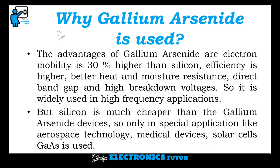Next is why gallium arsenide is used. The advantages of gallium arsenide are: electron mobility is 30% higher than silicon, efficiency is higher, better heat and moisture resistance, direct band gap, and high breakdown voltages. So it is widely used in high frequency applications. But silicon is much cheaper than gallium arsenide devices.